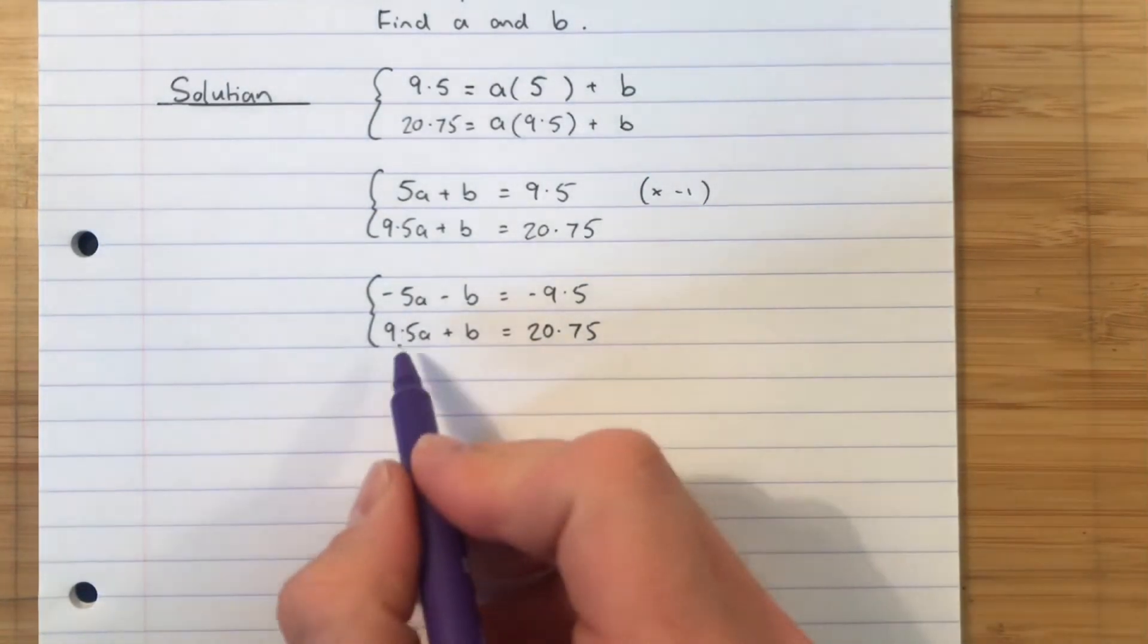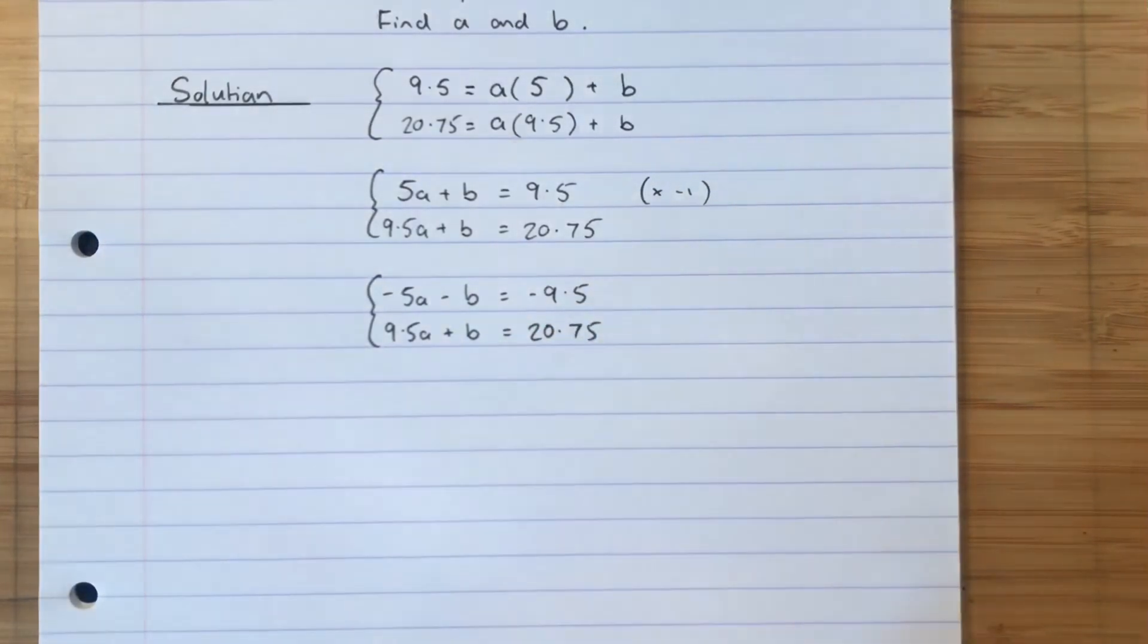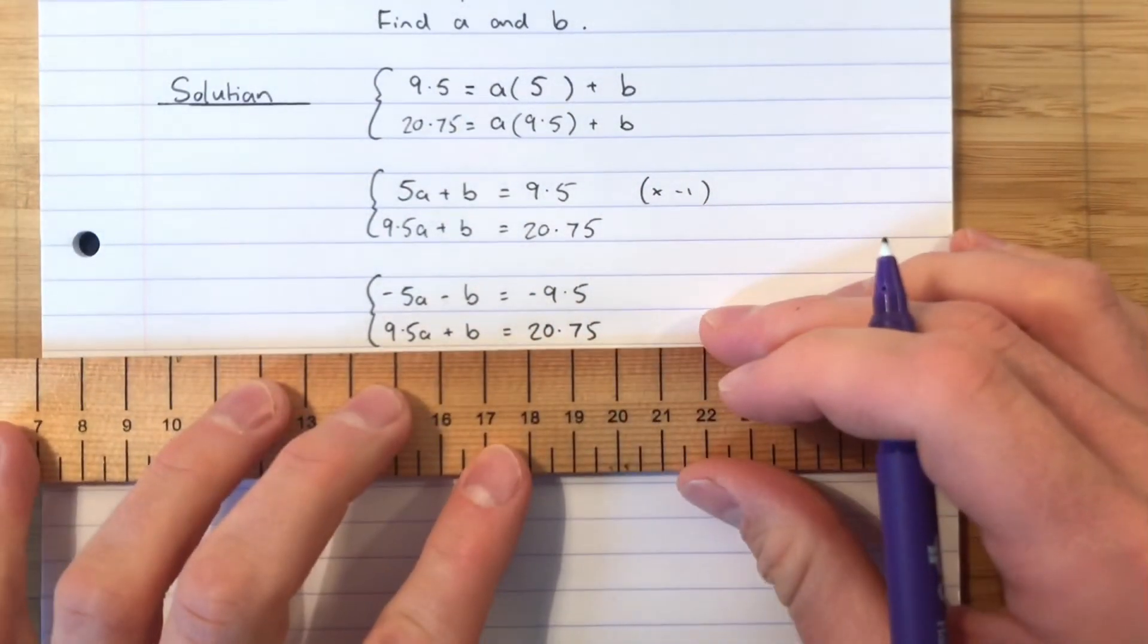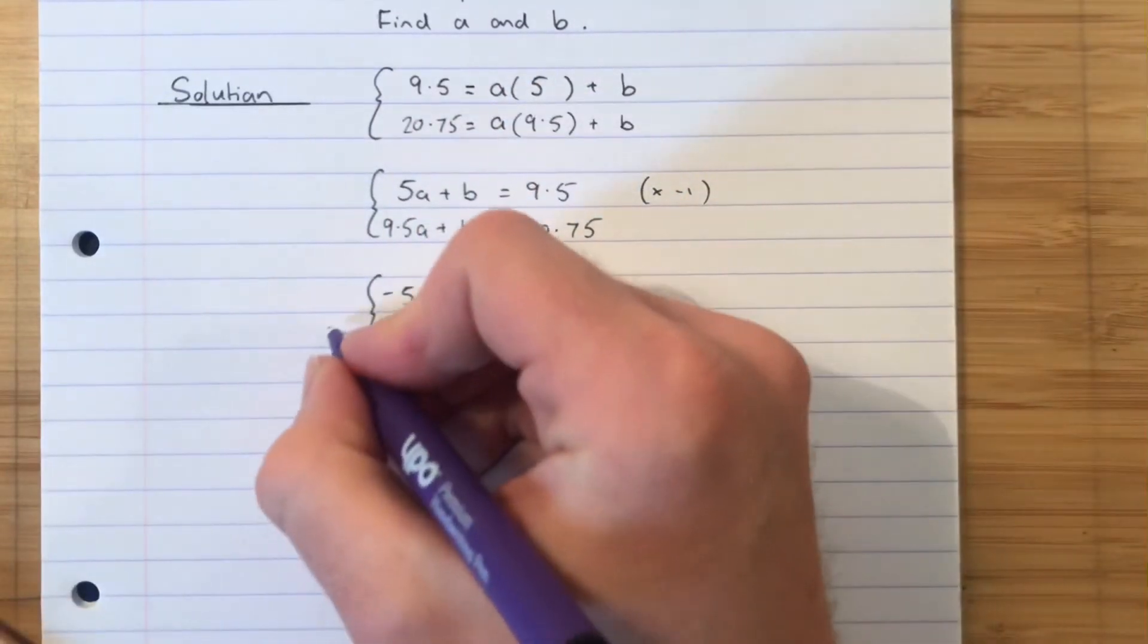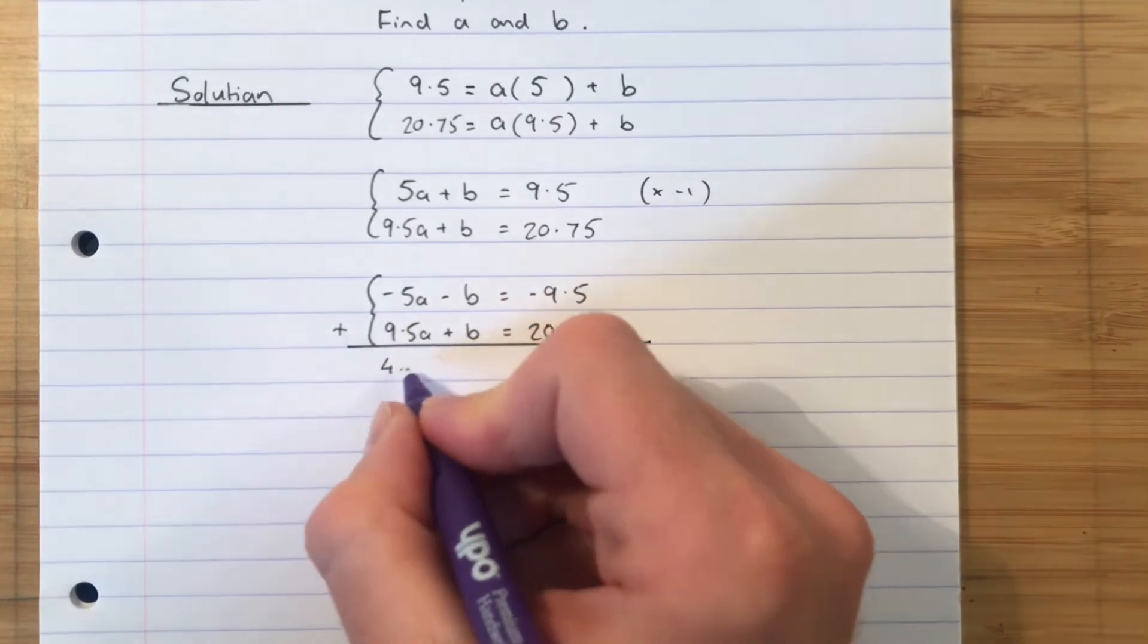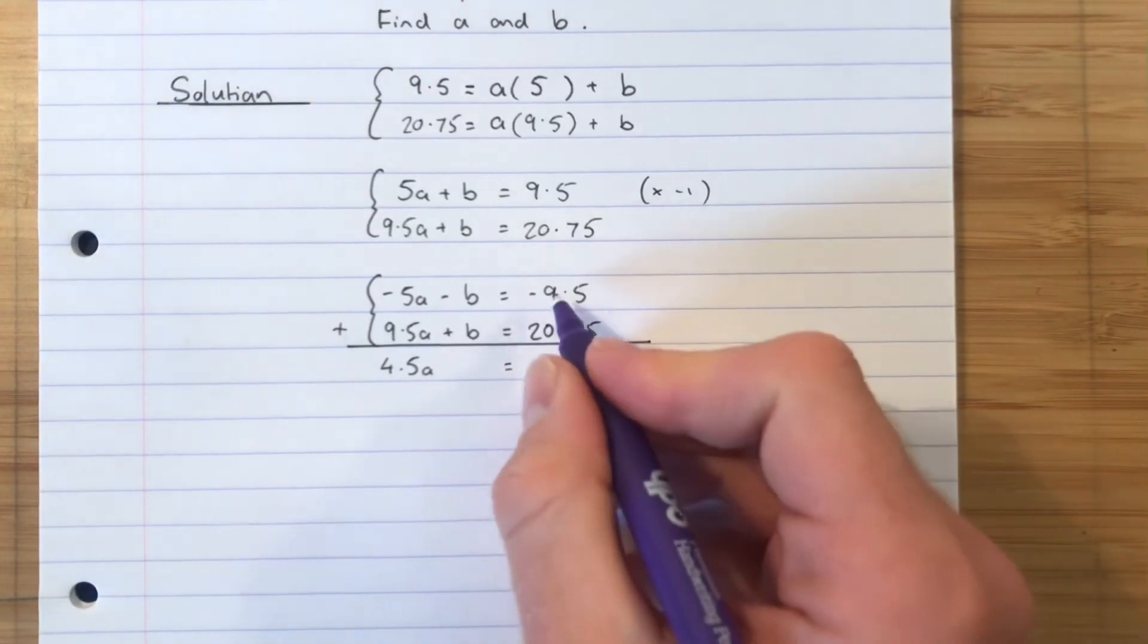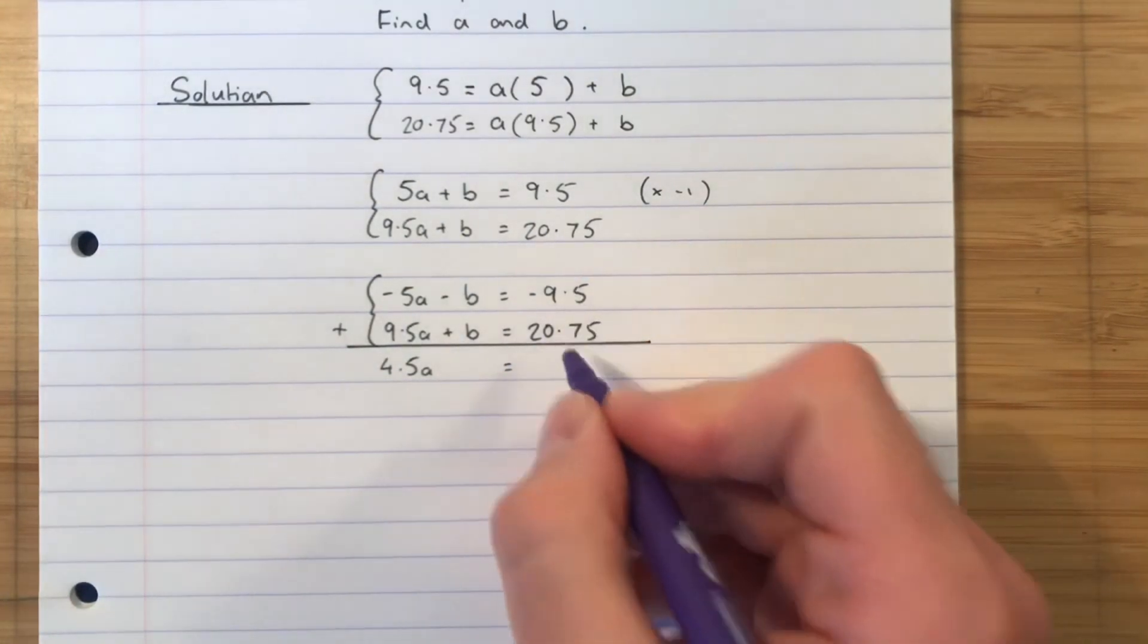Now, 9.5 take away 5 gives me 4.5A. I'm going to add down the way. So I'm adding these two together. So negative 5 add 9.5 gives me 4.5A. Negative B add B gives me nothing. That's what we hoped would happen. And negative 9.5 add 20.75.